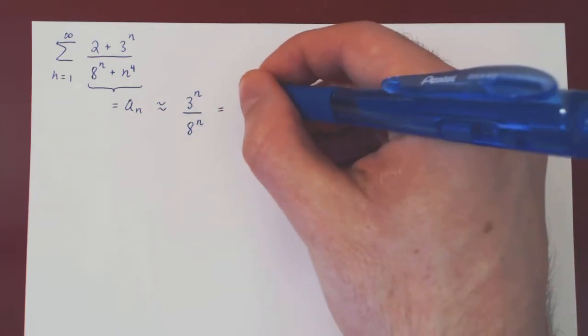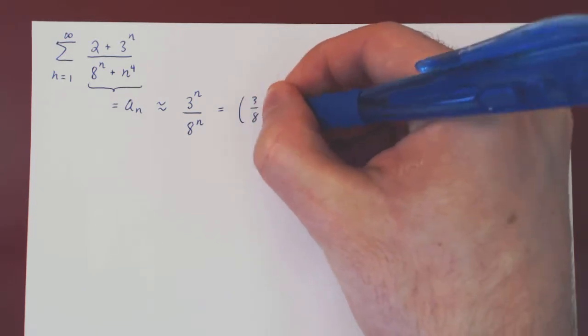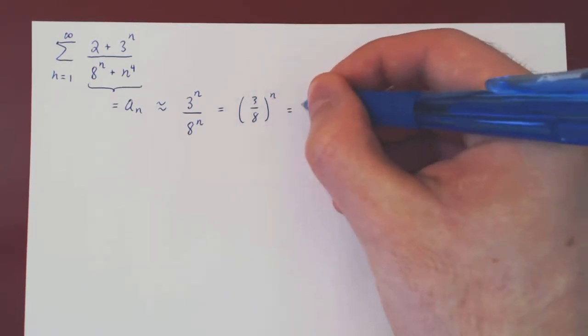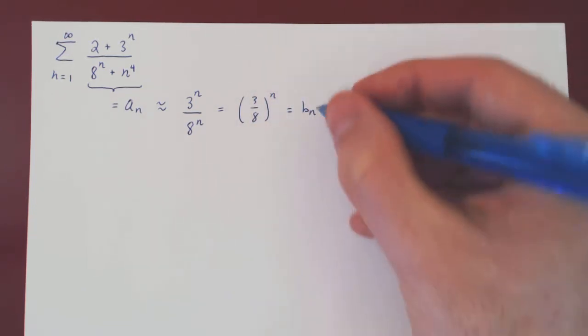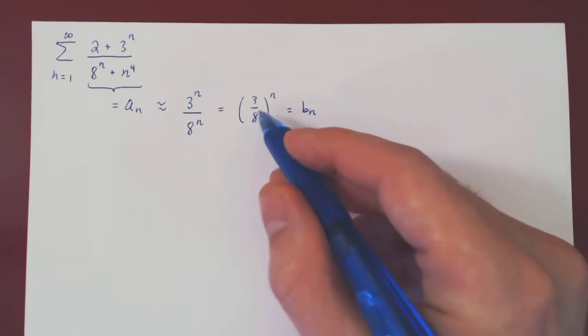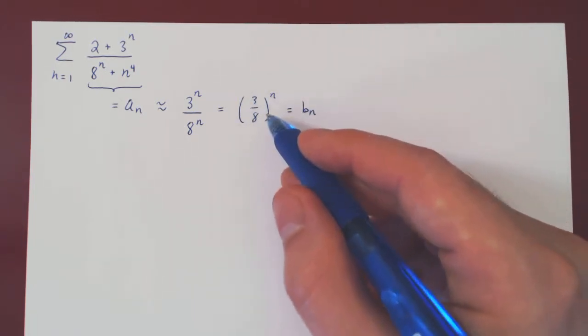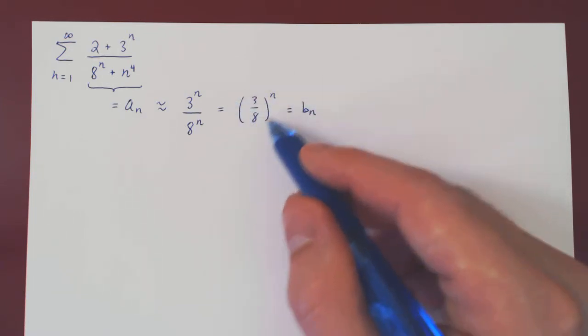And you can of course combine this as simply 3 over 8 to the n, and this is now b_n. And you should be happy about this because this is now a geometric sequence. So as you sum over b_n, you'll have a geometric series, and you know what happens in this case.